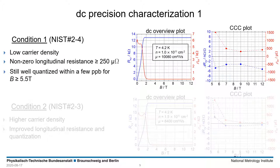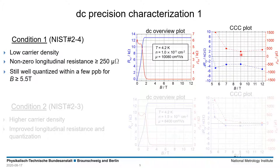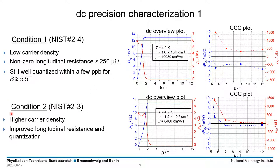We characterized the device named NIST number 2 under different doping conditions. The first condition describes a relatively low carrier density of 1×10¹¹ per square centimeter, with resistance quantization starting below 2 tesla as seen in the left plot. The CCC plot on the right shows that the longitudinal resistance R_XX drops to about 500–300 µΩ between 7 and 12 tesla, which is still relatively high compared to the typical ~10 µΩ under optimal conditions. After retuning the device for the next cooldown, R_XX approaches values close to zero, and the deviation of the measured Hall resistance from the expected value — half of the Klitzing constant — is within 1 ppb starting at 7 tesla.